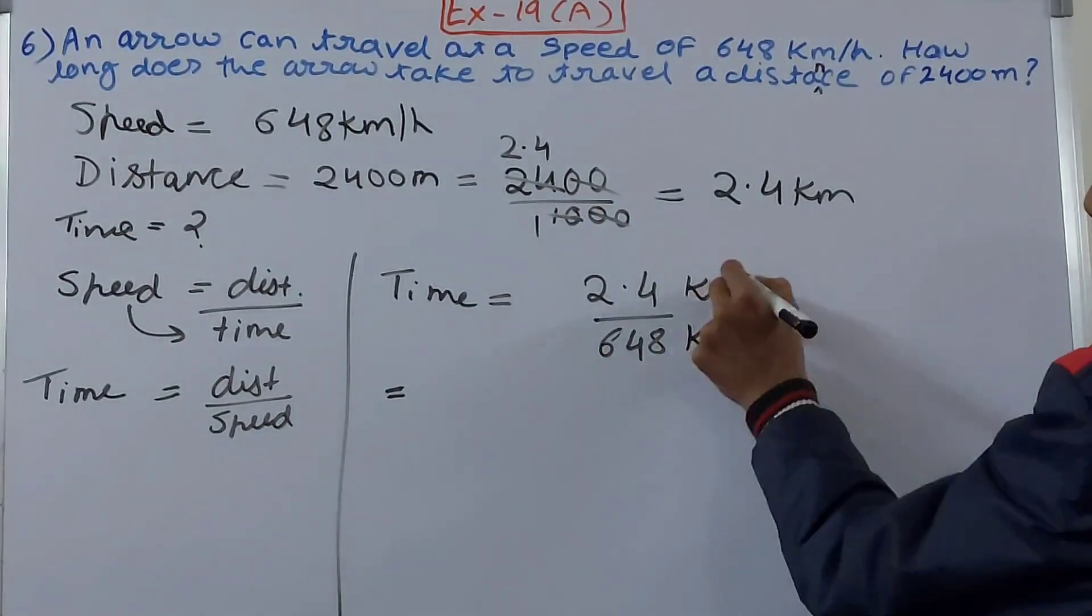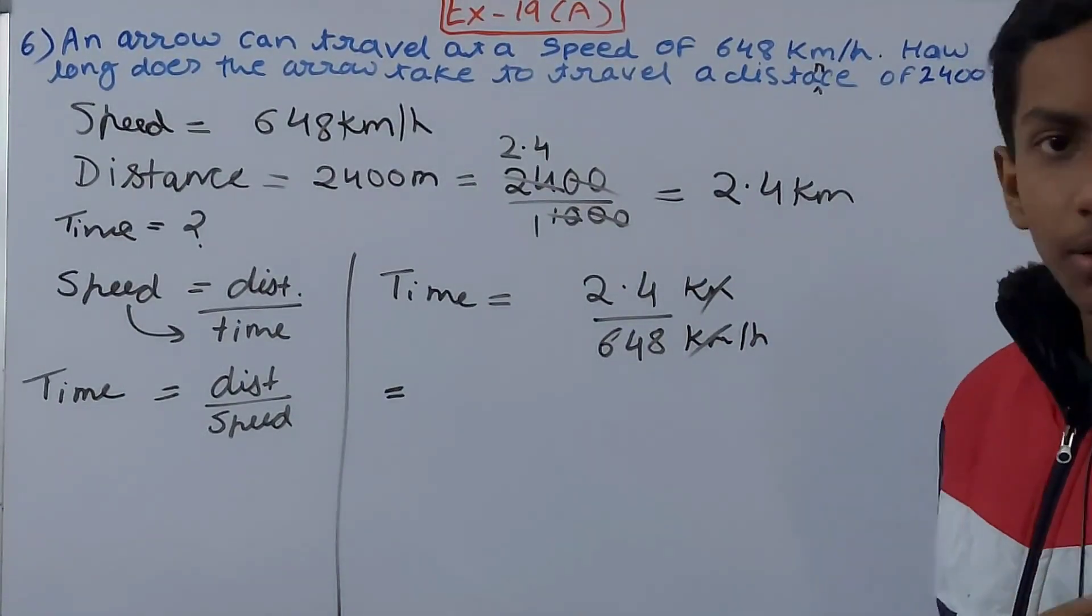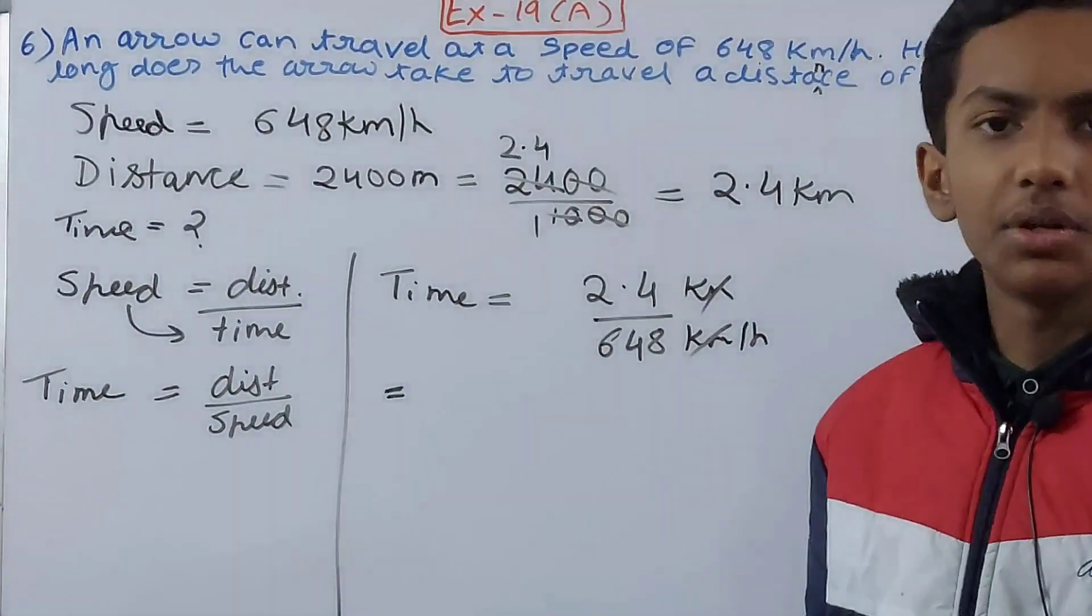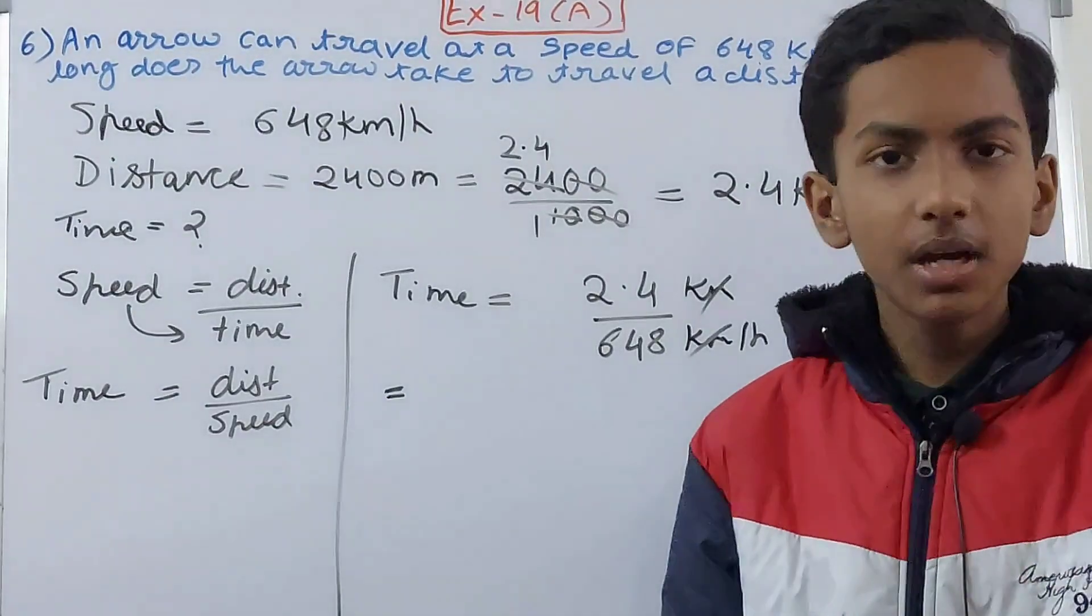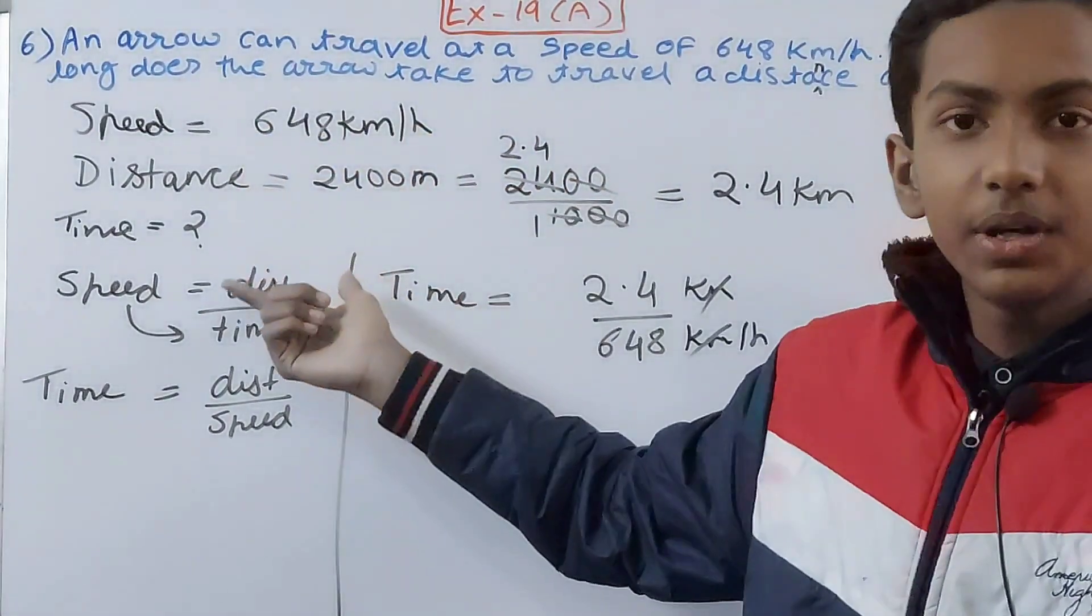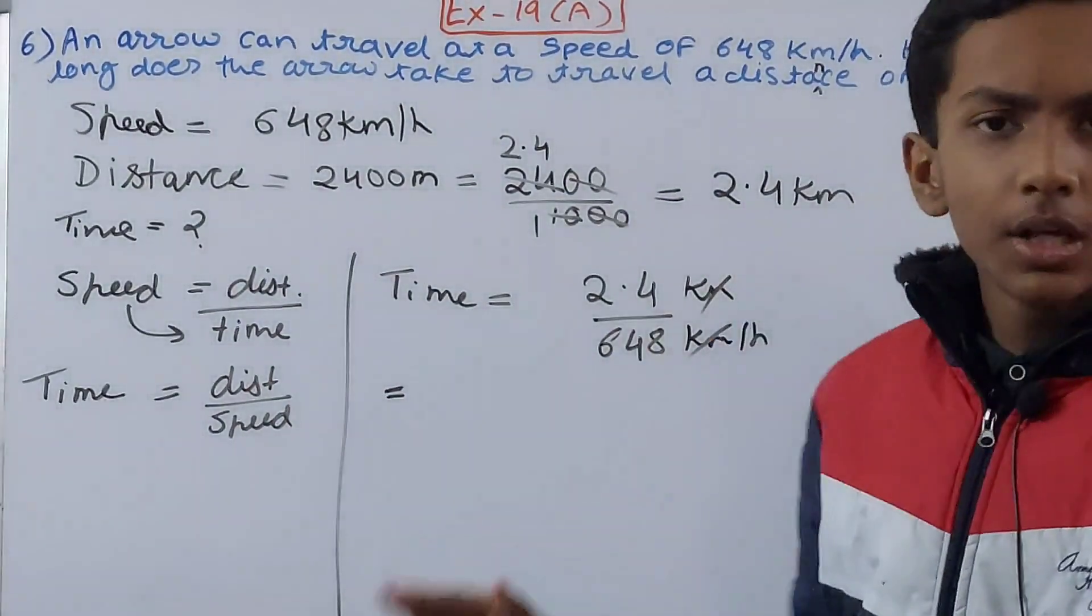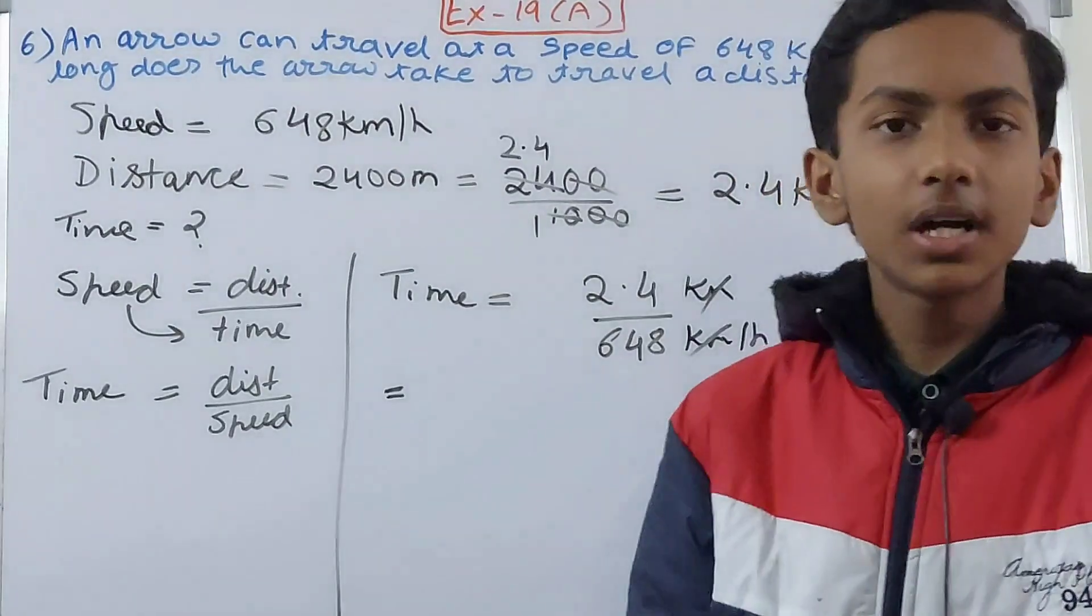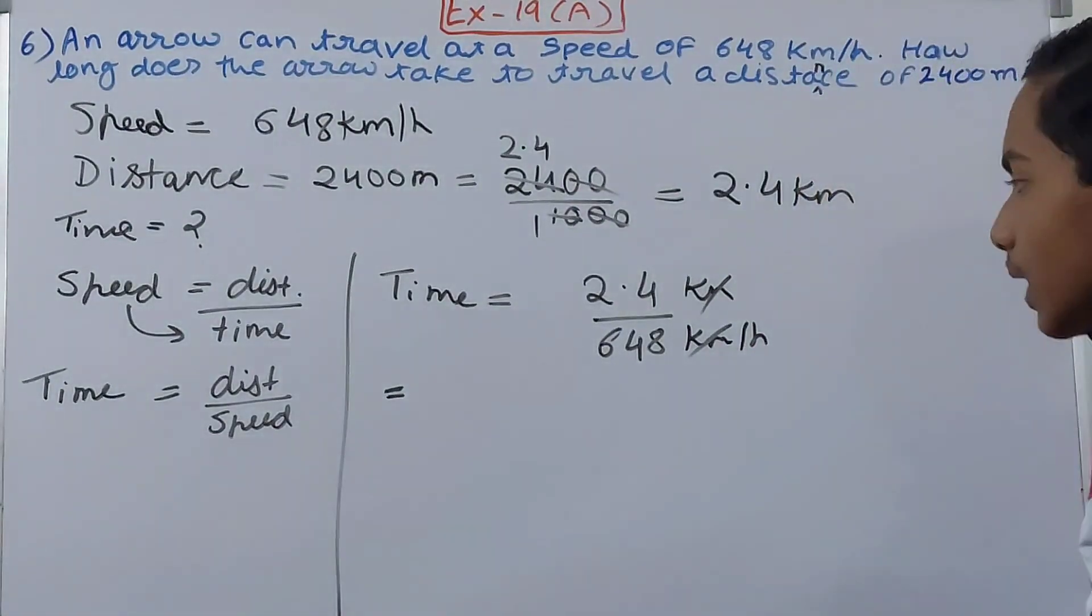Don't worry about the unit. The answer that you get can be in any unit - you can make it in hours and you can make it in seconds. But the thing is the unit should be convenient. Now you see here that if the arrow is traveling 648 kilometers in one hour and it is asking the time for 2.4 kilometers, so it is better to find the time in seconds rather than hours. So what I will do is convert the answer that will be in hours into seconds.